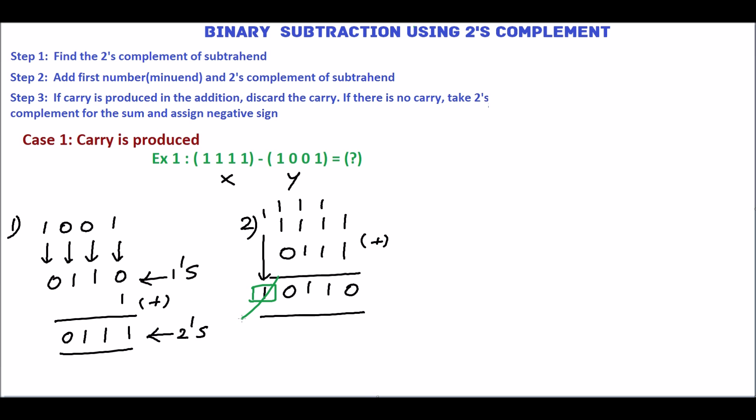The remaining bits will be the final answer. So the final answer is 0, 1, 1, 0 base 2. We will cross-check this answer.